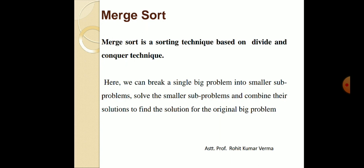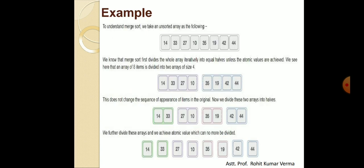So in merge sort, first we are dividing and at last we are combining the list. Let's learn this concept with the help of an example. Here we have an unsorted array with a total of eight numbers. Our task is to sort these numbers using merge sort. First, we are dividing our unsorted array into two halves — the first half has four numbers and the second half has another four numbers.